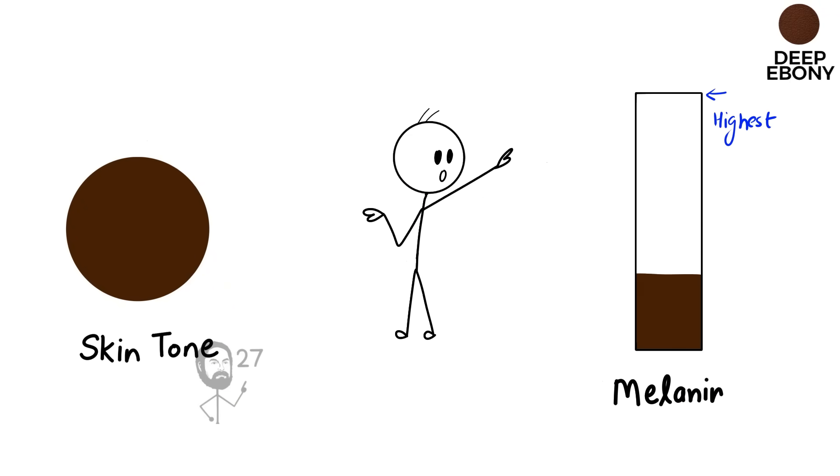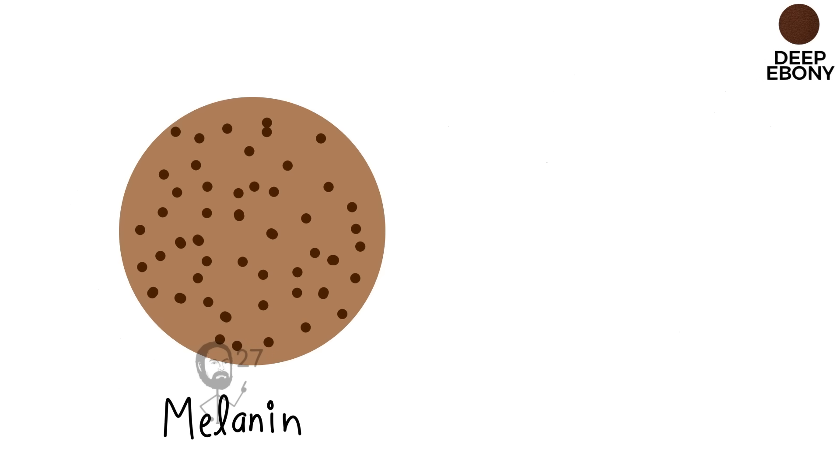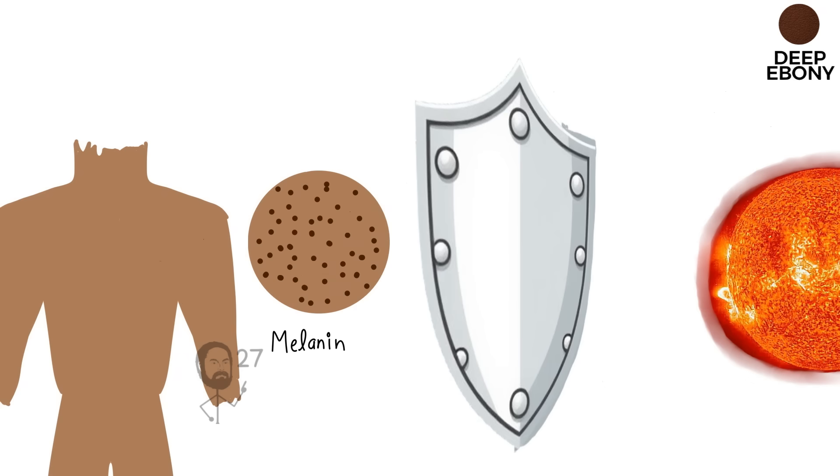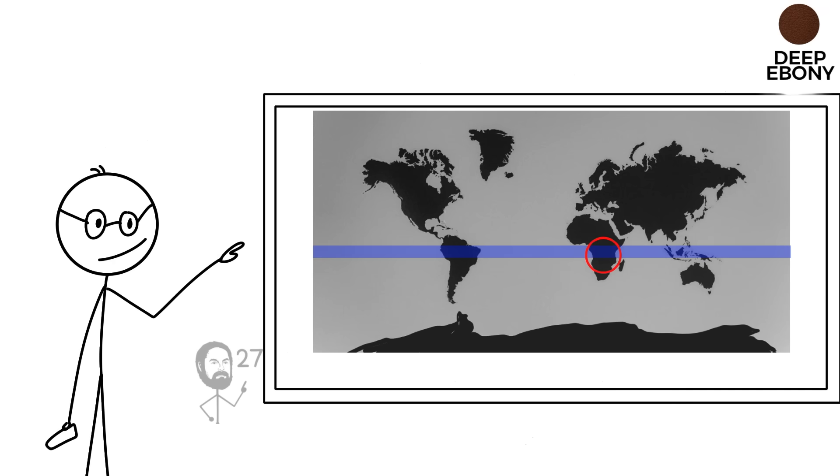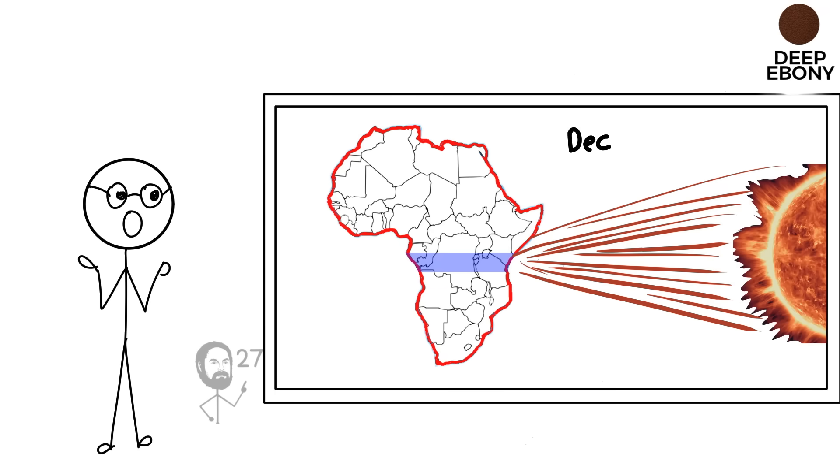Deep ebony skin. This skin tone represents the highest concentration of melanin that human evolution has produced. Melanin is the natural pigment in our skin that determines color and provides protection against ultraviolet radiation. It developed in regions such as equatorial Africa, where ultraviolet radiation is at its most intense throughout the year.